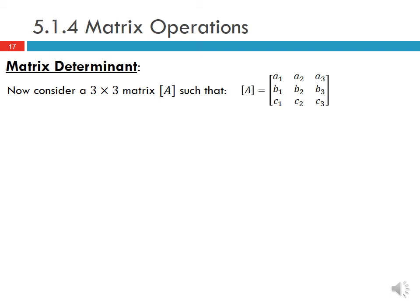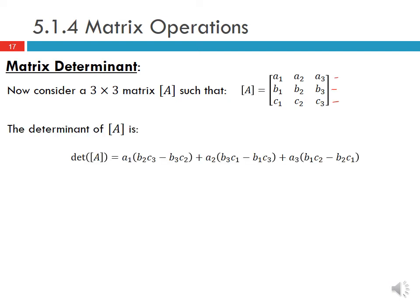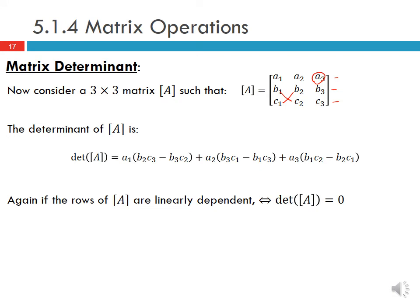For a 3 by 3 matrix with rows [A1, A2, A3], [B1, B2, B3], [C1, C2, C3], the determinant is A1·(B2·C3 minus B3·C2) minus A2·(B1·C3 minus B3·C1) plus A3·(B1·C2 minus B2·C1). Again, the determinant equals zero if and only if the rows are linearly dependent.